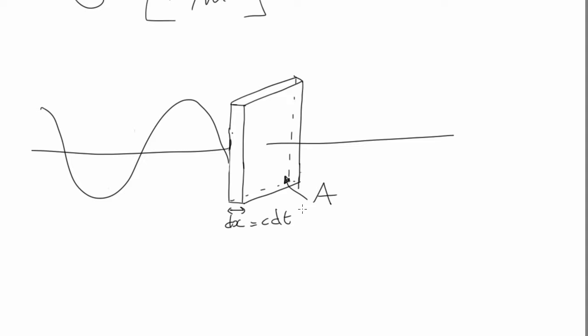Okay, so the energy that passes through this area A in the time dt occupies the volume, and we'll call it dV, which is equal to A, the area, multiplied by dx, which is C dt.